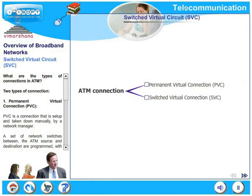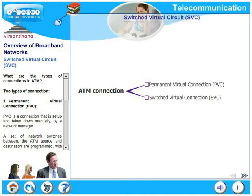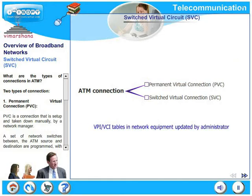Let's continue with the ATM connections. We have already seen there are two types of connections. The first one is Permanent Virtual Connection, PVC, and the second type is Switched Virtual Connection, SVC. PVC is a connection that is set up and taken down manually by a network manager. The set of network switches between the ATM source and destination are programmed with predefined values for VCI and VPI.